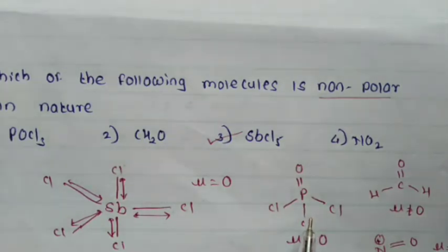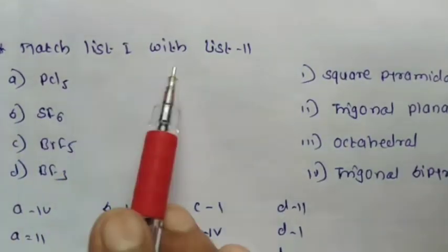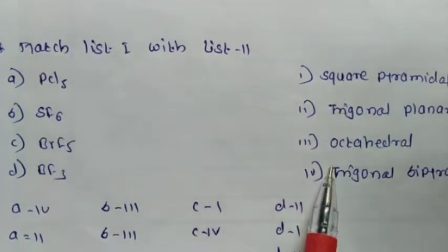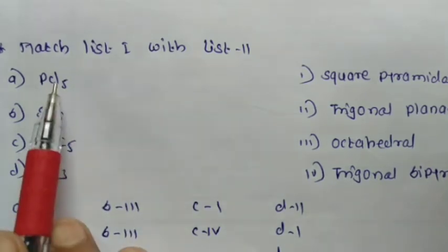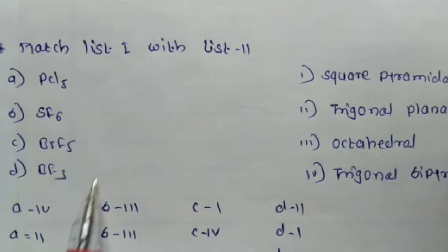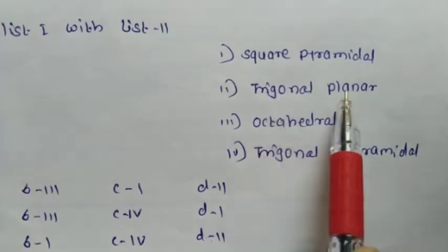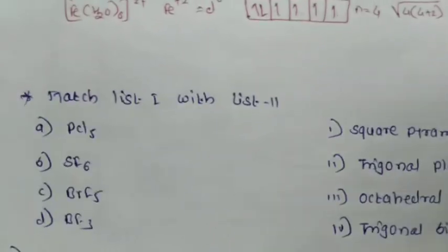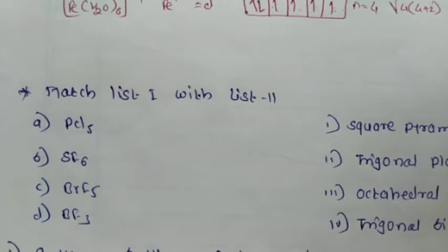Last question of this section: match list 1 with list 2. List 1 gives molecules: PCl₅, SF₆, BrF₅, and BF₃. List 2 gives geometries: square pyramidal, trigonal planar, octahedral, and trigonal bipyramidal. Find out the geometry of each molecule using their valence electrons.